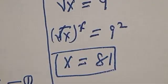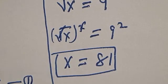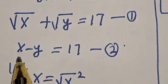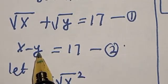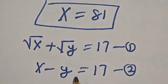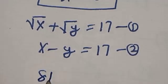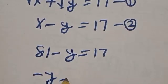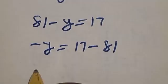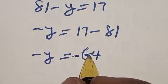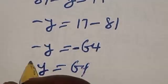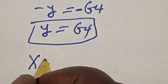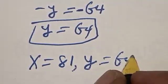Now we need to find the value of y. We can solve for y using equation 2: x minus y equals 17. Since x is 81, we have 81 minus y equals 17. So minus y equals 17 minus 81, which gives minus y equals minus 64. Therefore, y is equal to 64. Our final answers are x equals 81 and y equals 64.